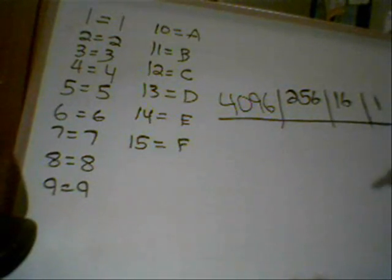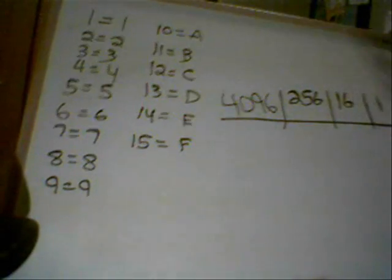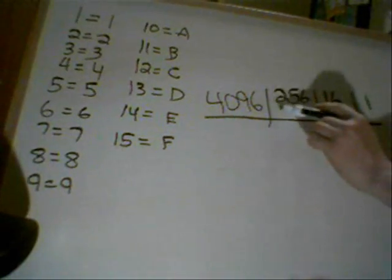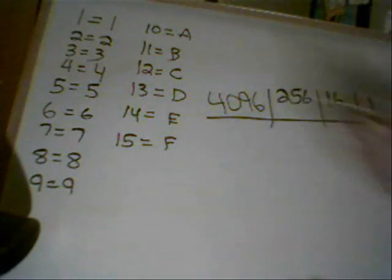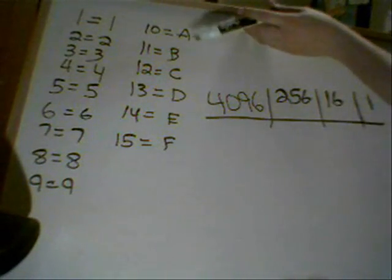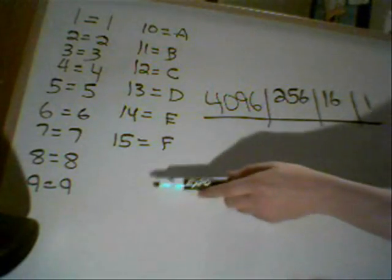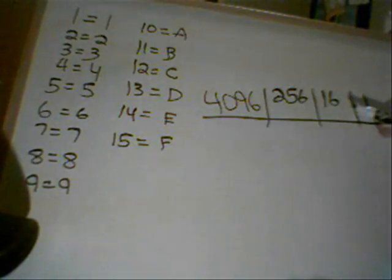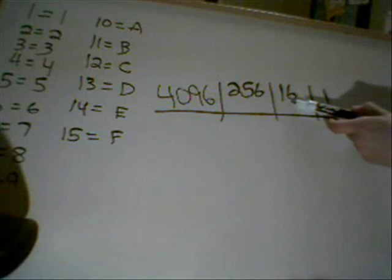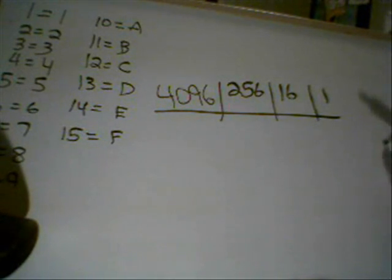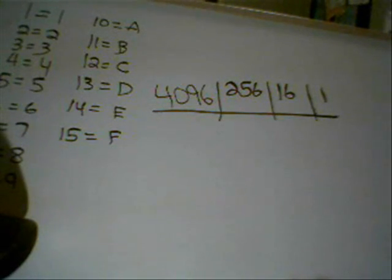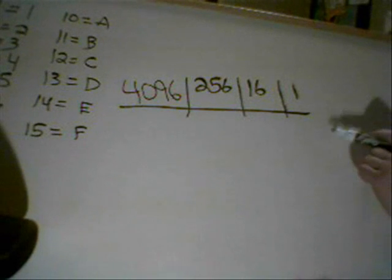Anyways, so we got 10 is equal to A because there is no 10 on this board or on this chart. Same with 11, 12, 13, 14, 15. But that's why we don't put 16 is equal to G because we have 16 up here. Okay, so hopefully you understood what I said there. That was a little confusing. But anyways, if you have any problems, just message me.